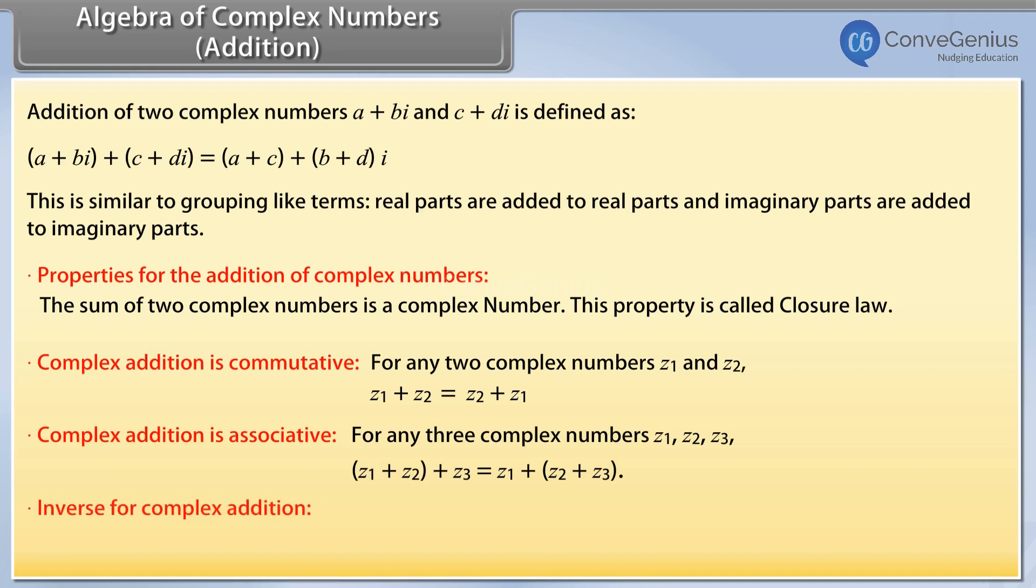Inverse for complex addition. Each element z is equal to x plus iota y of the set of complex numbers has an inverse element minus z is equal to minus x minus iota y.